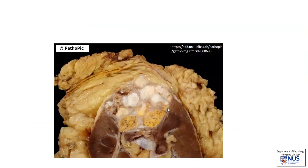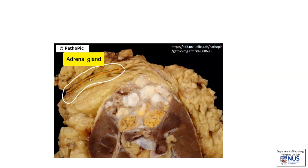Here is another example. The color is quite different here because this case has been fixed in formalin for a number of hours, so the kidney is a lot browner. This is the renal cortex, the renal medulla, and here we have the tumor. This is all perinephric fat, and in fact this is the adrenal gland — you can see the bright yellow adrenal cortex and the dark brown adrenal medulla. Clearly, the tumor is not involving the adrenal gland in this plane of sectioning.